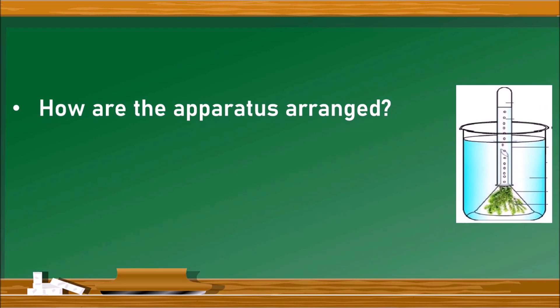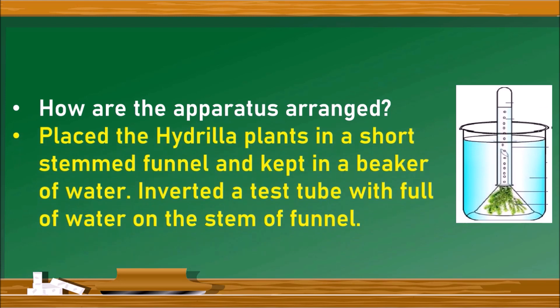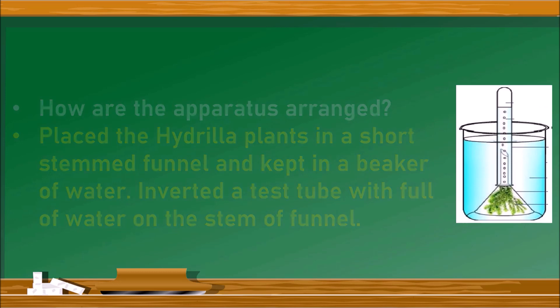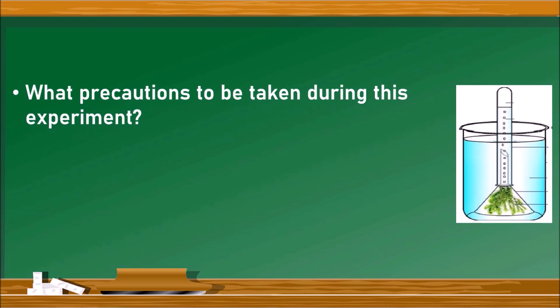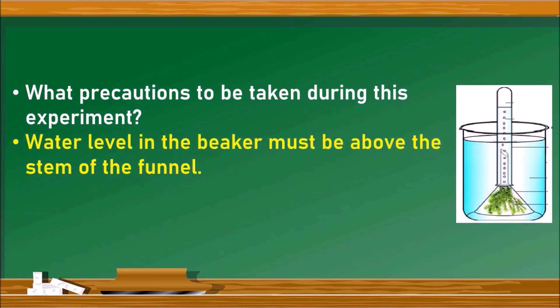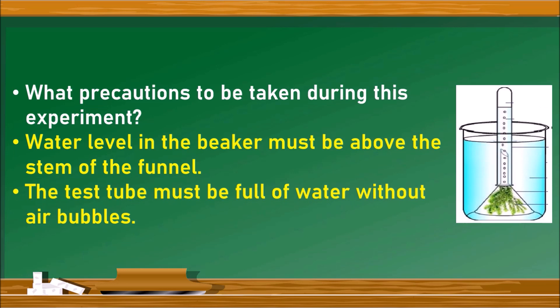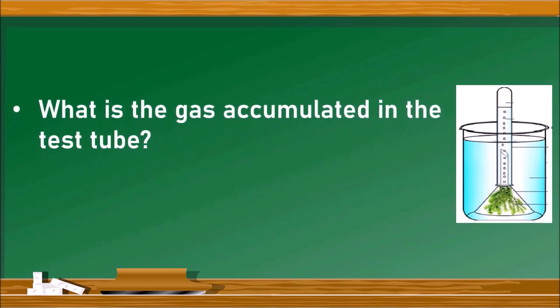Arrangement of apparatus: hydrilla plants are placed in a short-stemmed funnel and kept in a beaker of water. An inverted test tube full of water is placed on the stem of the funnel. Precautions: the water level in the beaker must be above the stem of the funnel to prevent escape of oxygen, and the test tube must be full of water without any air bubbles before the experiment.